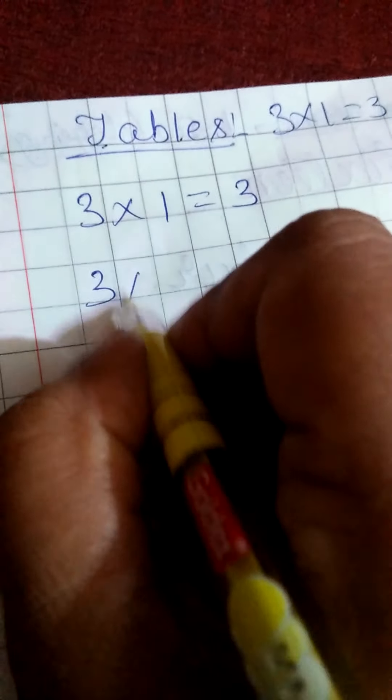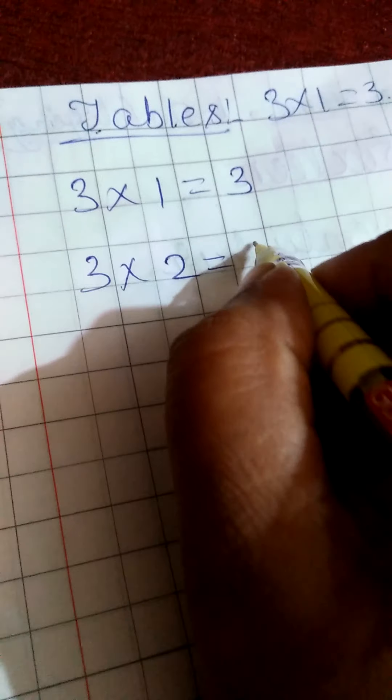Next, tables. 3 ones are 3, okay. 3 ones are 3. 3 twos are 6.